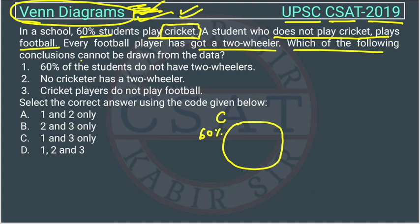We have to find which conclusions cannot be drawn — which conclusions are actually wrong. This is very important and people often make a mistake here.